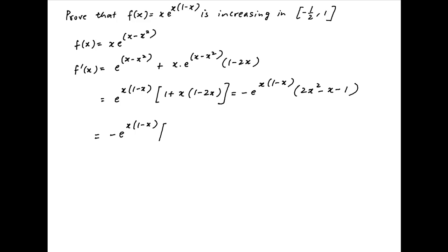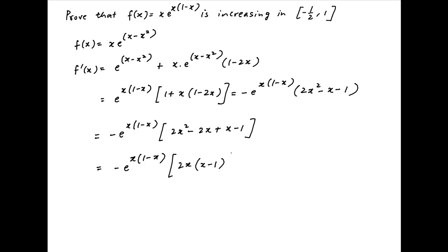Now 2x squared minus x minus 1 can be written as 2x squared minus 2x plus x minus 1. Therefore f'(x) equals minus of e raised to the power x times 1 minus x times, in brackets, 2x times x minus 1 plus x minus 1.